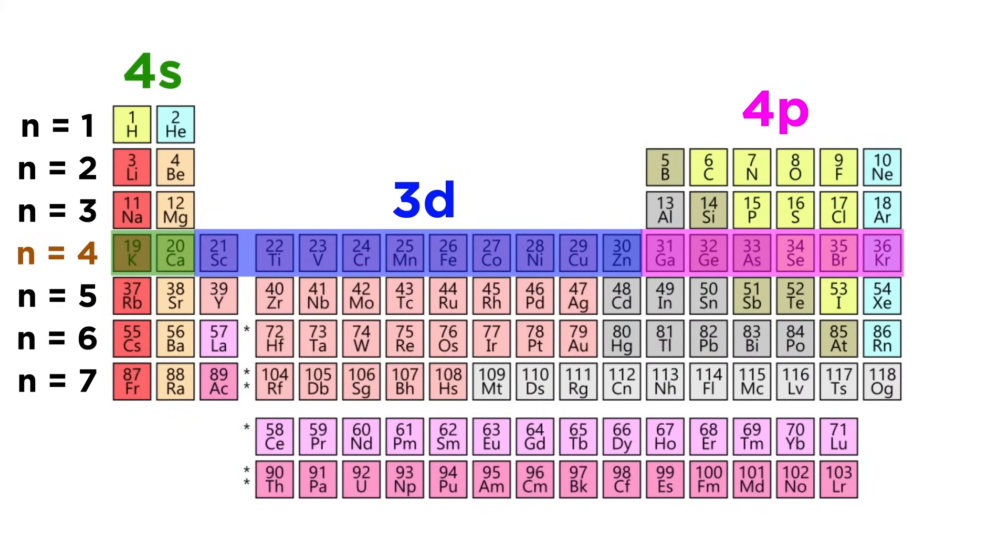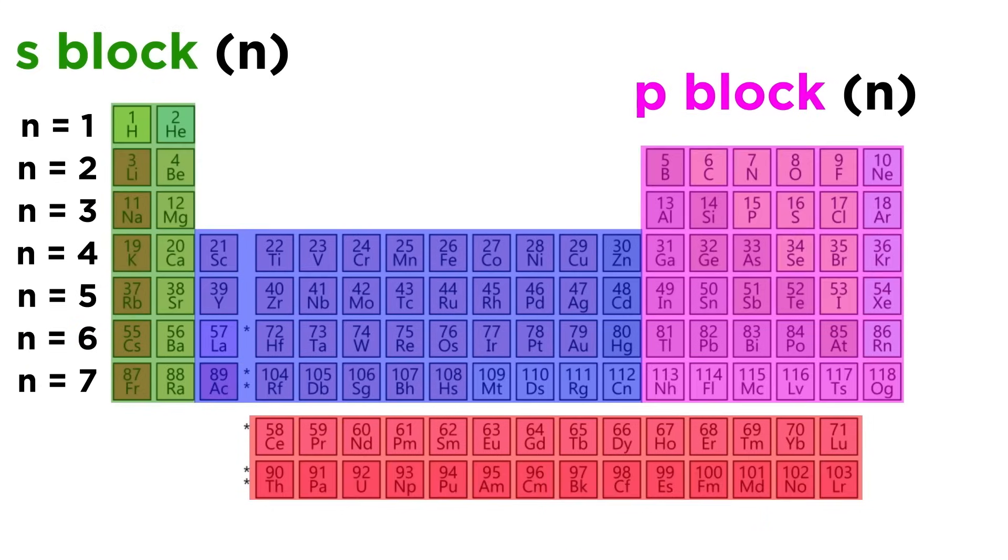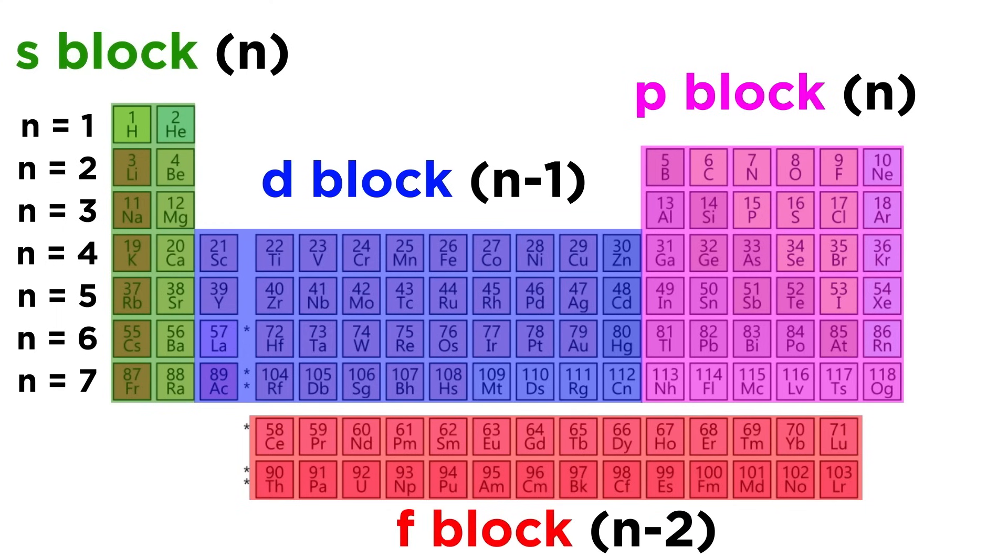We can see that in the fourth period it's actually the 3d orbitals that follow the 4s, and in the sixth period the order is 6s, then 4f, then 5d, then 6p. The S and P orbitals will both match the period number, which will equal the principal quantum number. The Ds are one behind, and the Fs are two behind.